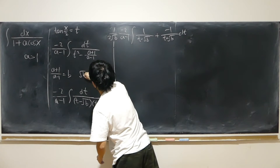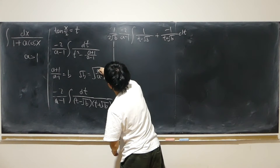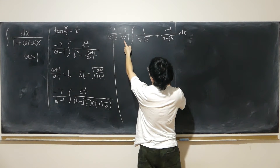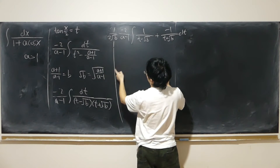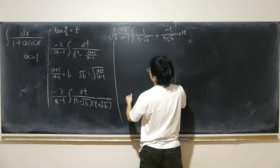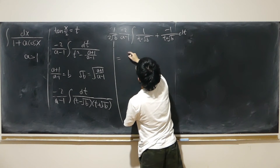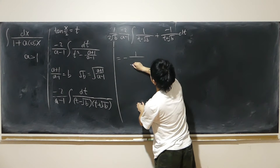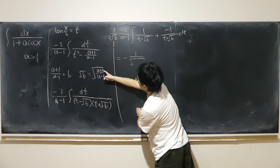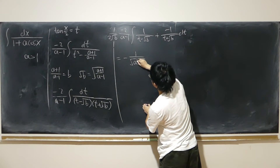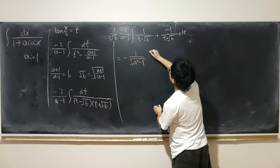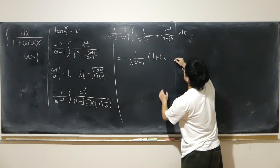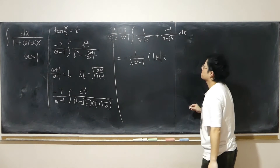sqrt(b) is the square root of (a plus 1) over (a minus 1), which equals sqrt(a plus 1) over sqrt(a minus 1). So the prefactor becomes negative 1 over sqrt(a plus 1) times sqrt(a minus 1), i.e., negative 1 over sqrt(a squared minus 1). Integrating gives log of absolute value of (t minus sqrt(b)) minus log of absolute value of (t plus sqrt(b)), plus C.